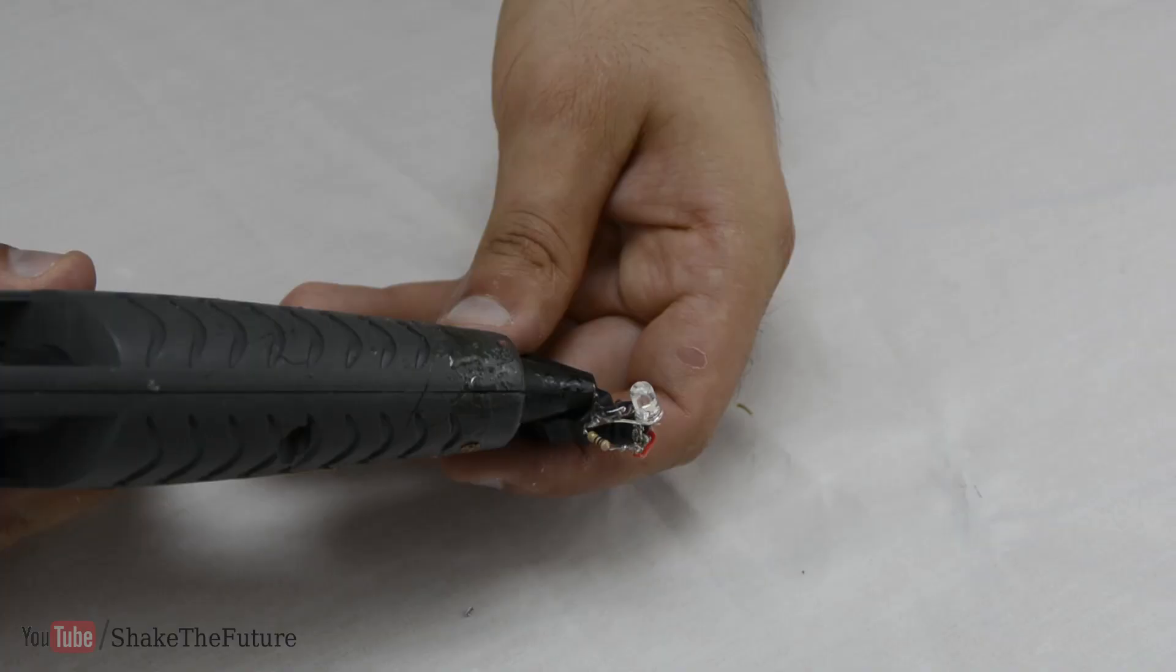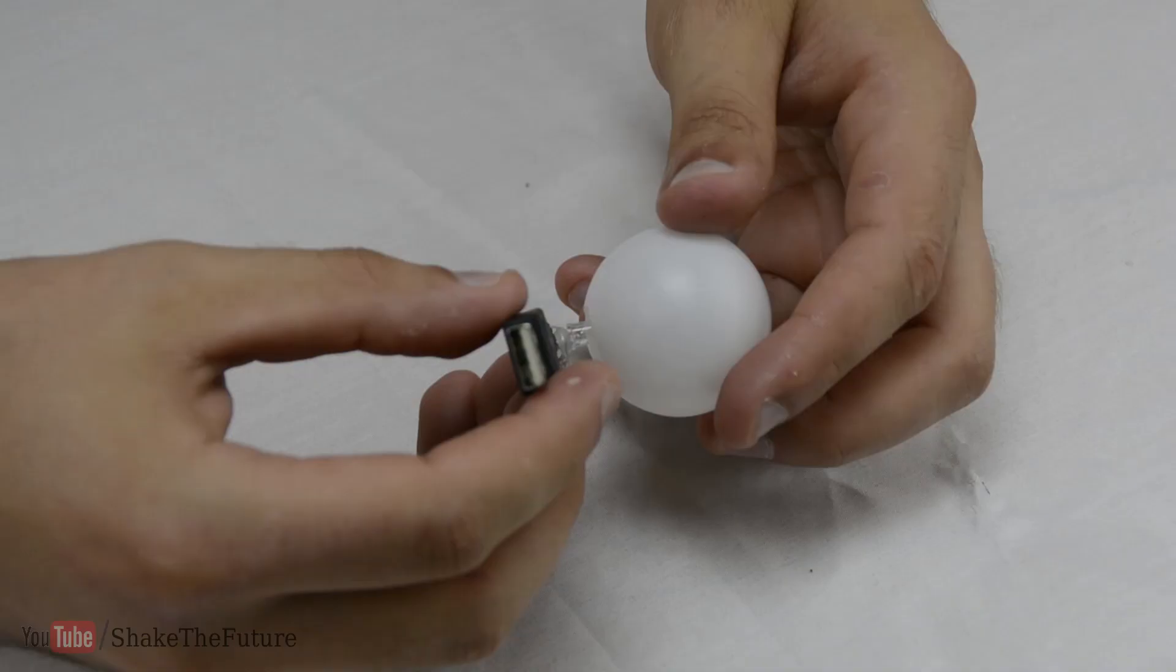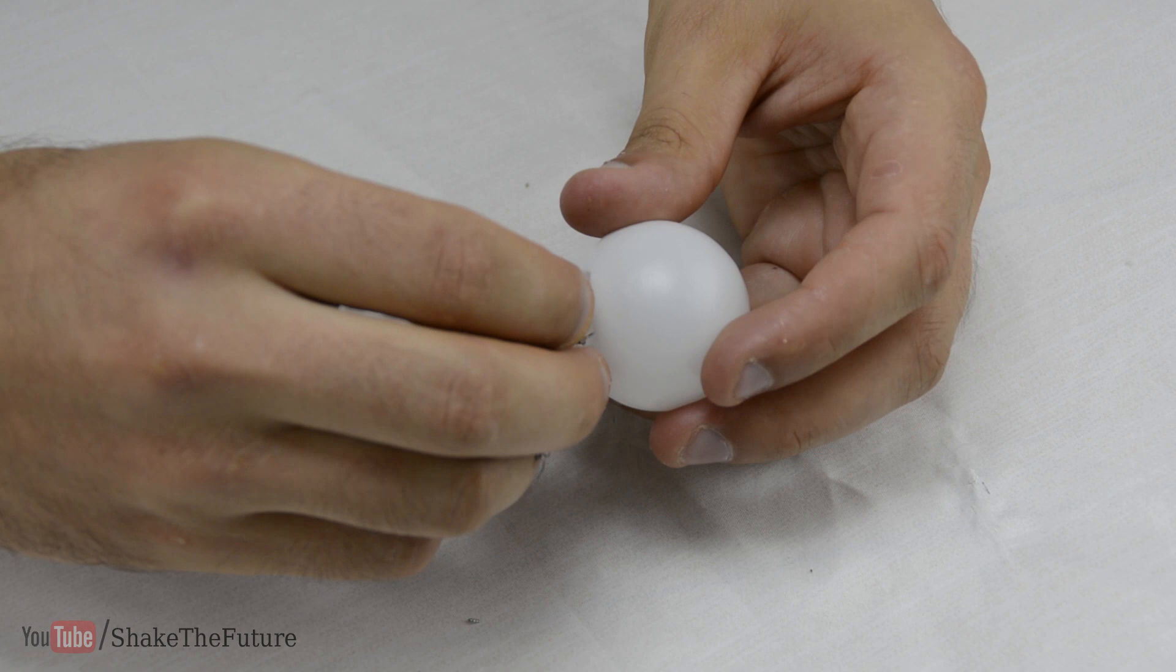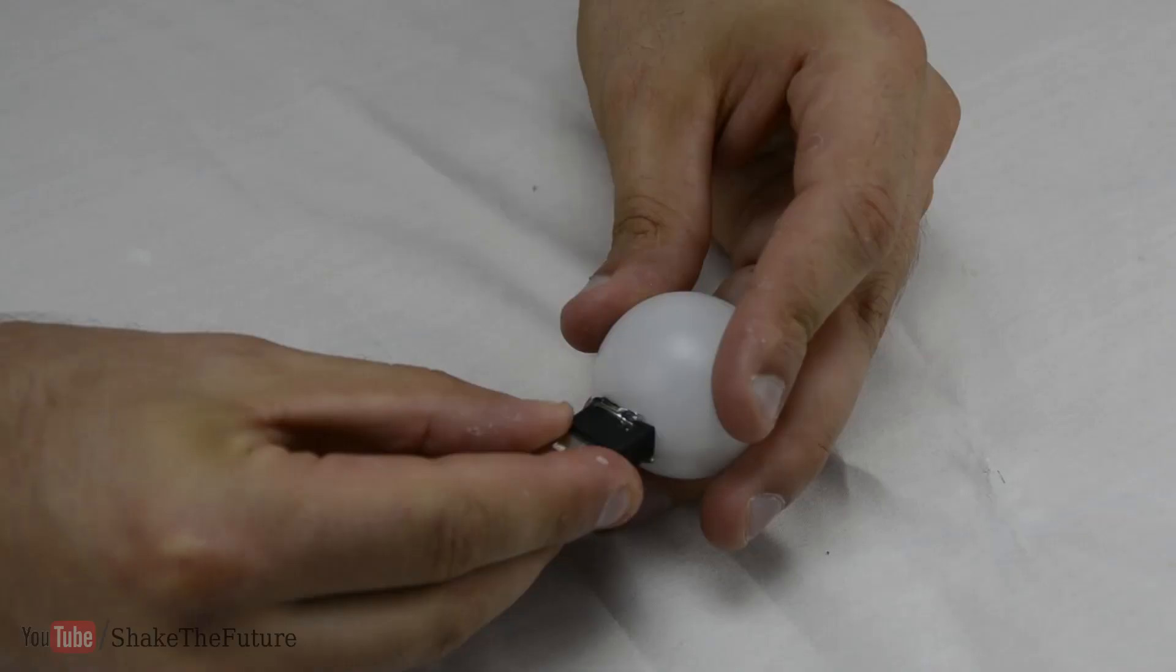A little bit of glue and we're almost done. I cut a hole in a ping pong ball and slid it onto the plug. I also used a drop of glue so it doesn't fall off.